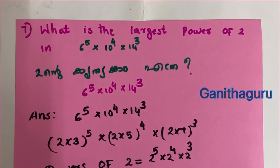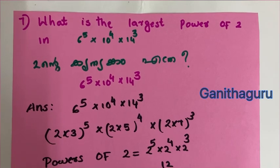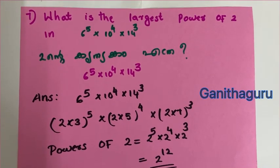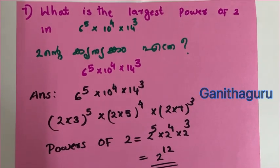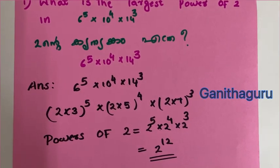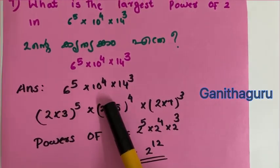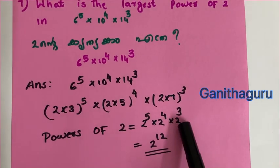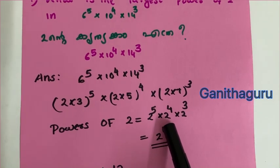7th question: What is the largest power of 2 in 6 raised to 5 into 10 raised to 4 into 14 raised to 3? We express each in terms of prime factors: 6 raised to 5 gives 2 raised to 5, 10 raised to 4 gives 2 raised to 4, and 14 raised to 3 gives 2 raised to 3.